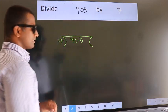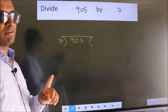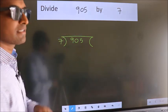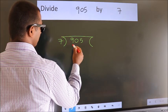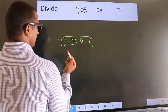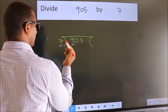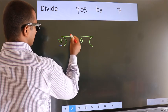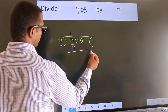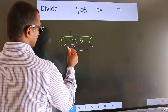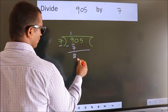This is your step 1. Next, here we have 9, here 7. A number close to 9 in 7 table is 7 once 7. Now, we should subtract. We get 2.